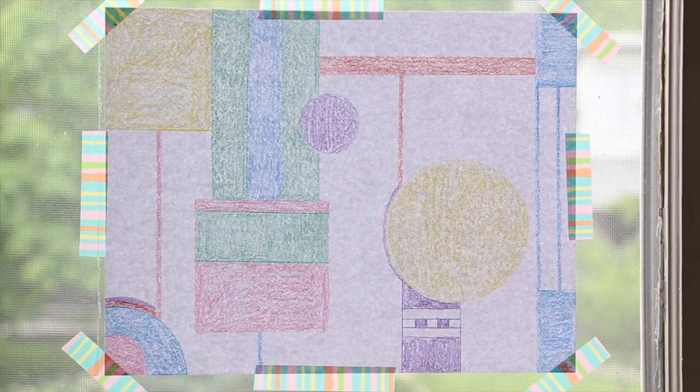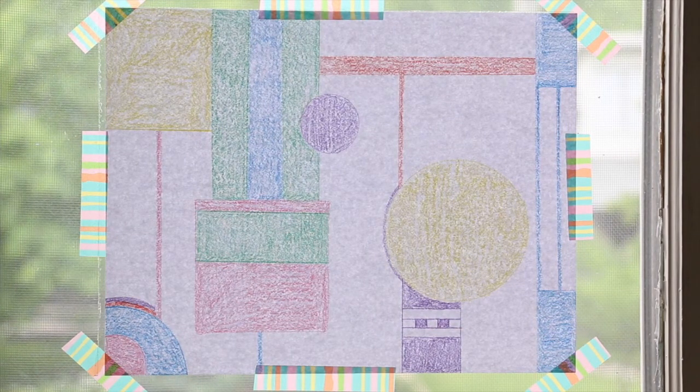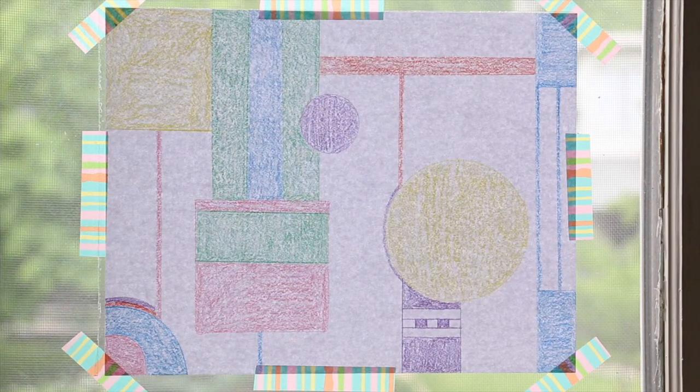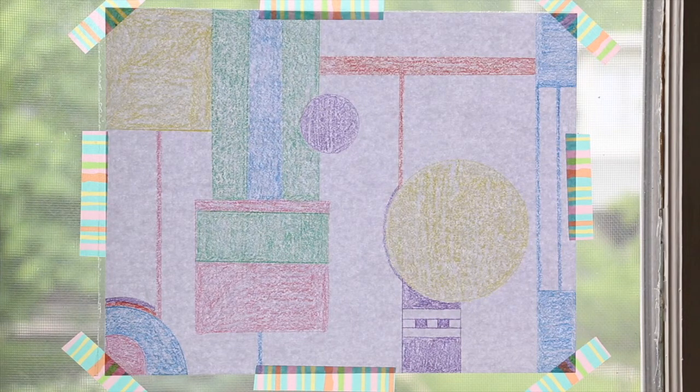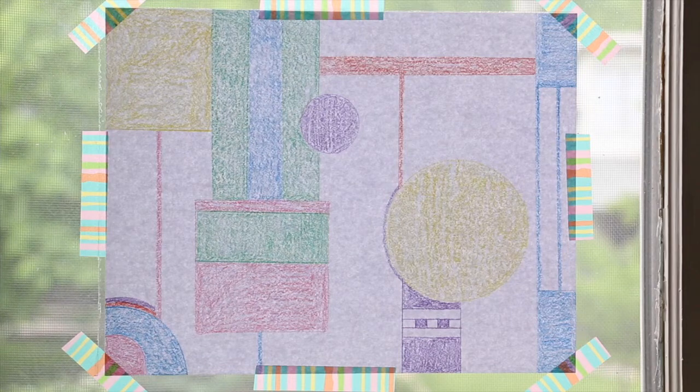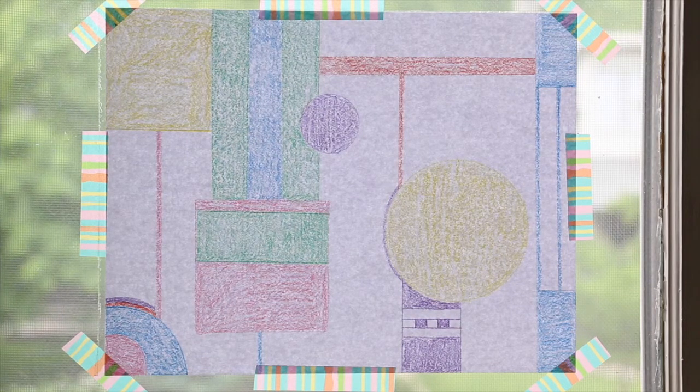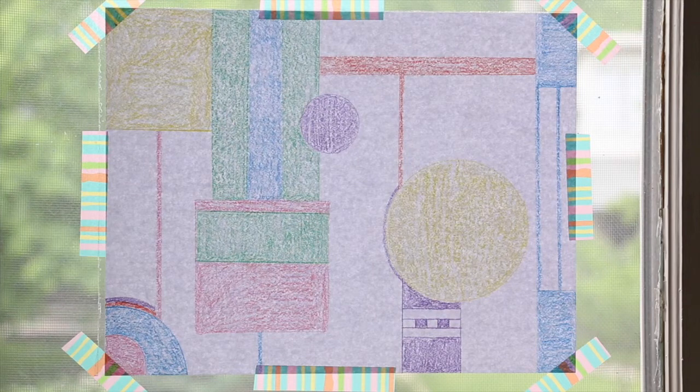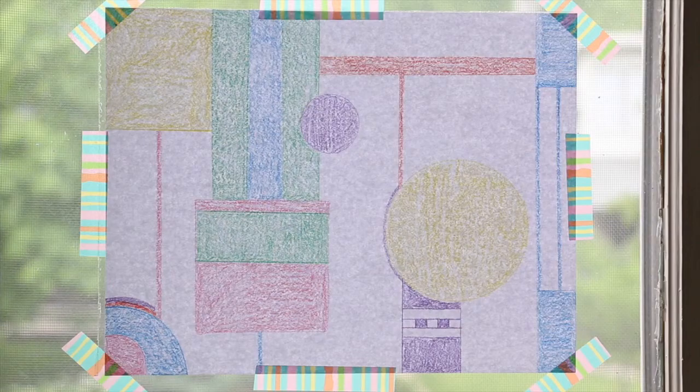Now our stained glass window is ready to be made. The next step is to use the transparent Clearlay and whatever else you're using, tissue paper or origami paper, any kind of transparent scraps you have in your classroom or art studio, and you will cut them to match the shapes in your colored pencil design and then just place them on that adhesive-backed Duralar and they'll stick.